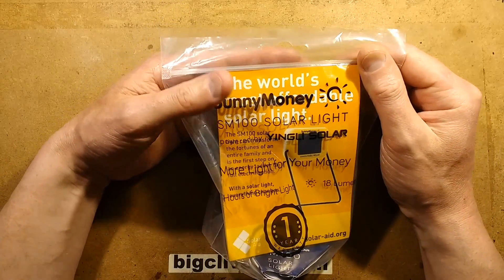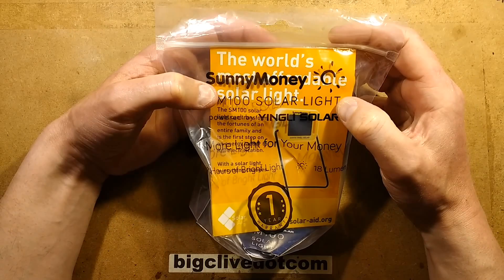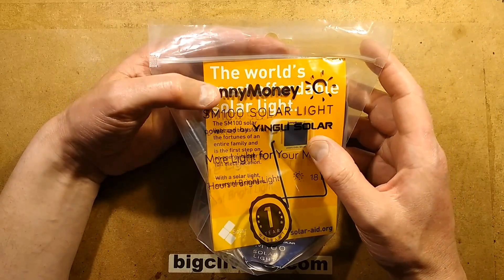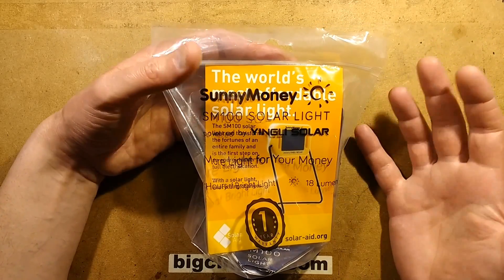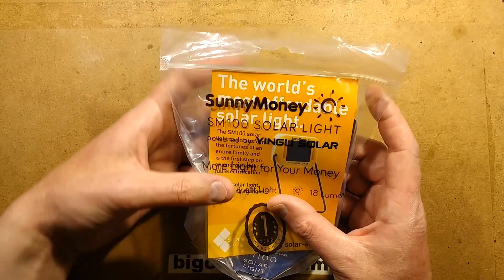This is a Sunny Money SM100 solar light, described as the world's most affordable solar light. The main targeted market is developing countries where they don't have a power grid but have plenty of sunshine. You can buy this in the UK.